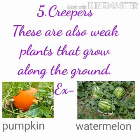Number 5: Creepers. These are also weak plants that grow along the ground. For example, pumpkin and watermelon.